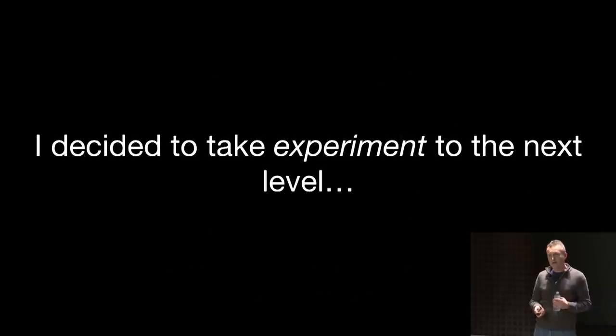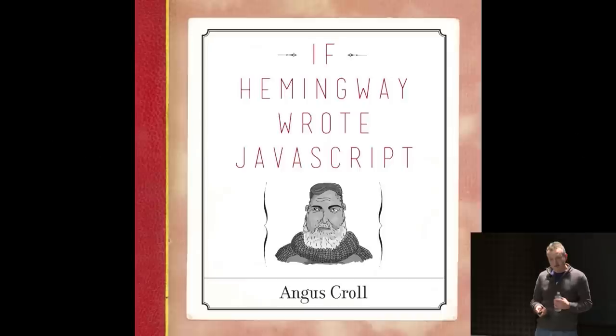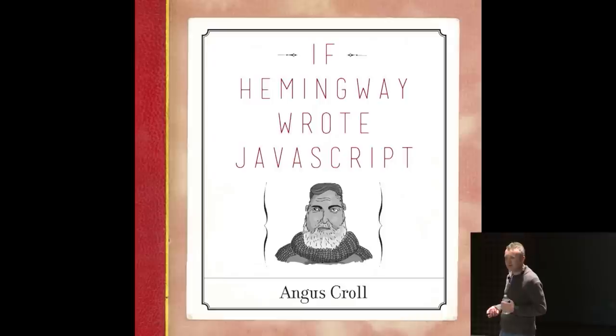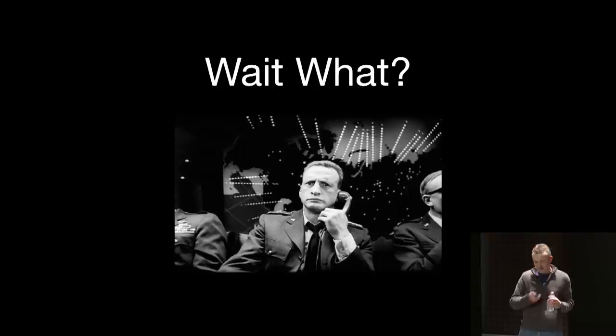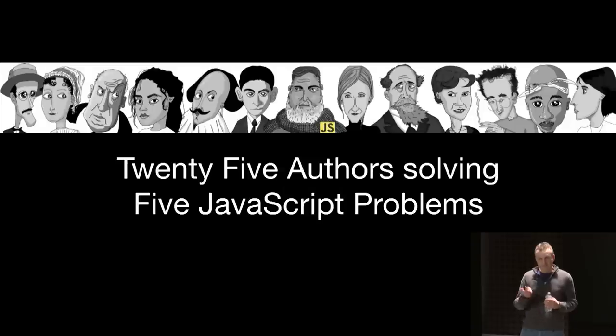And some of the earlier frameworks did stuff like extending native prototypes, which was also seen as a really bad thing at the time. But the language without that would not have the features that it has. So I decided to take experiment to the next level. So I wrote a book. I wrote a book called If Hemingway Wrote JavaScript. Now, you're probably saying, what? Authors and JavaScript. It's very different things. So what this book is, is 25 famous authors, Ernest Hemingway, William Shakespeare, a lot of other people. And I set five JavaScript problems and imagined what it would be like if they solved those.